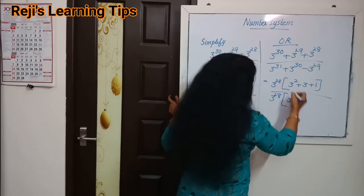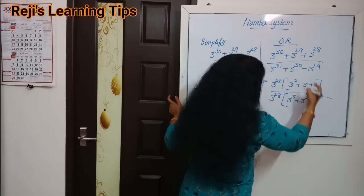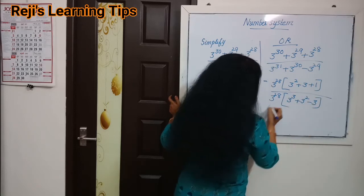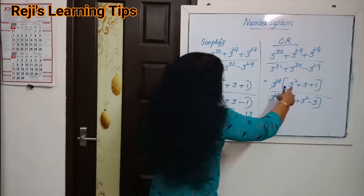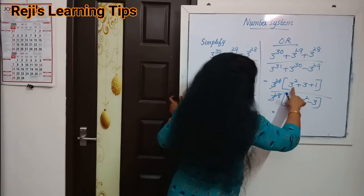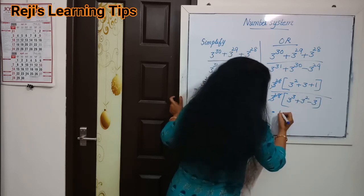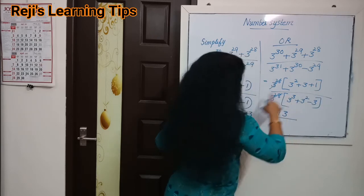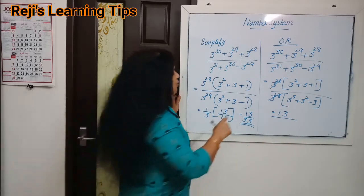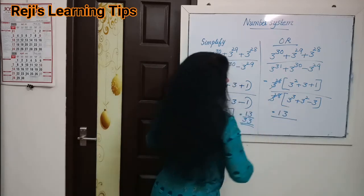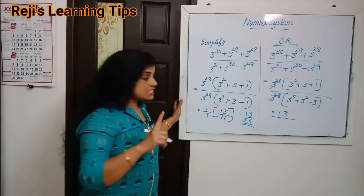In the denominator, taking 3 raise to 28 outside gives 3 raise to 3 plus 3 raise to 2 minus 3. Then we cancel 3 raise to 28. We get 3 square, which is 9; 9 plus 3 is 12; 12 plus 1 is 13, in the numerator. For the denominator: 3 raise to 3 means 3 into 3 into 3, that is 27; 27 plus 9 is 36; 36 minus 3 is 33.